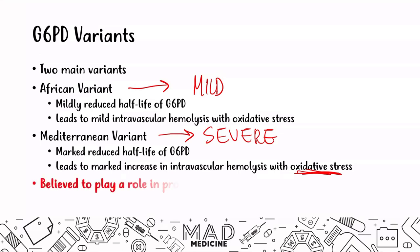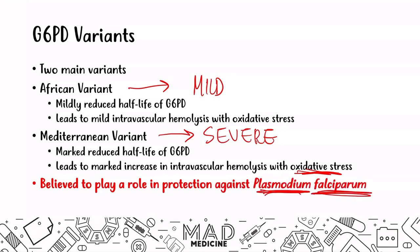G6PD deficiency is believed to play a role in protection against Plasmodium falciparum, aka malaria. Malaria infects red blood cells, but because those cells can't protect themselves from oxidative stress, the malaria isn't going to be able to remain comfortable in the red blood cell — the cell is being lysed in an oxidative stress environment. Since infection itself causes oxidative stress, malaria essentially leads to its own destruction in these patients.